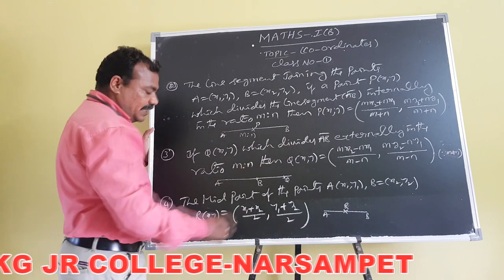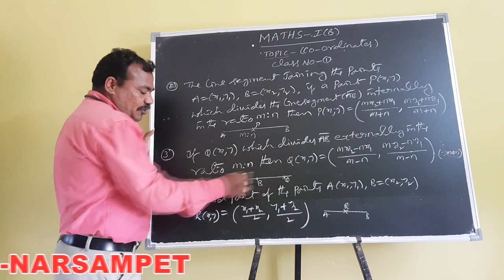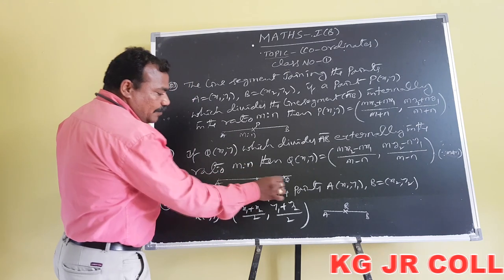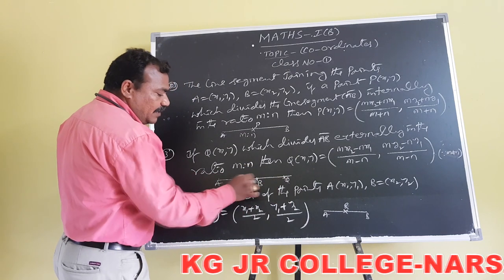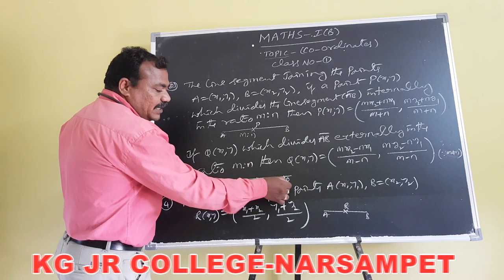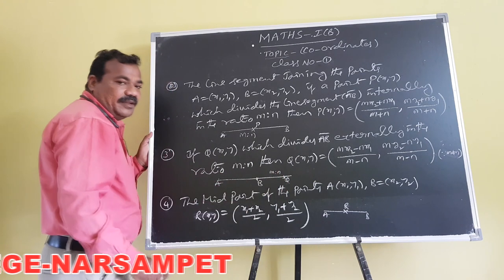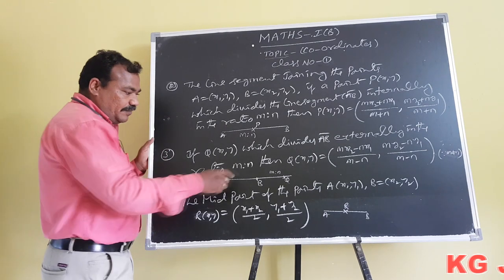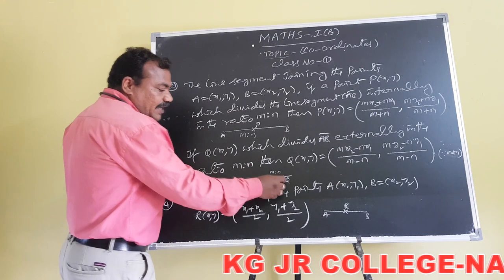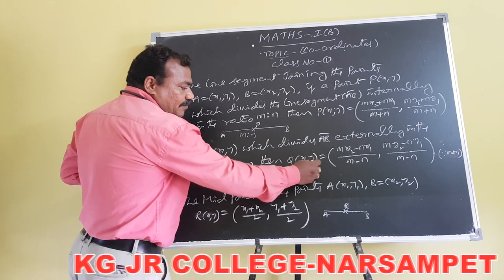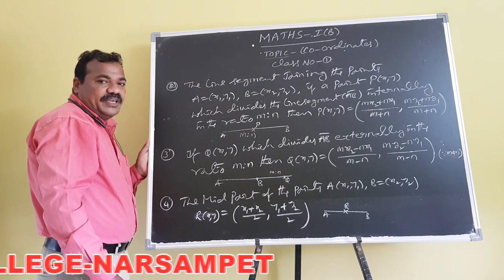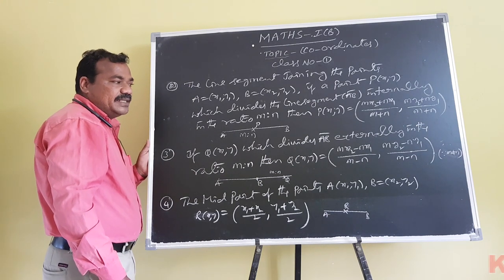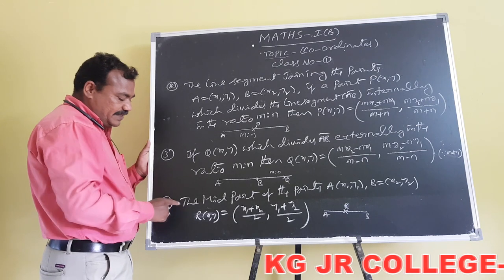If a point Q divides the line segment joining A and B externally in the ratio m:n, where m ≠ n, then the coordinates of Q are: x = (mx2 - nx1)/(m - n) and y = (my2 - ny1)/(m - n). Here, externally means the point lies outside the line segment.